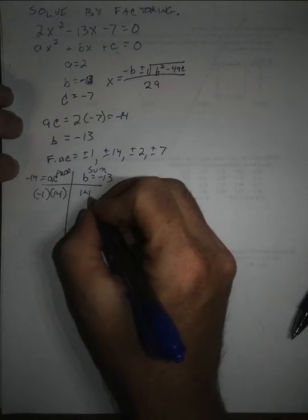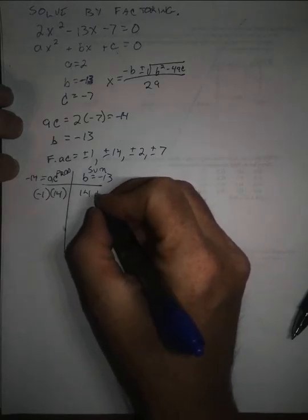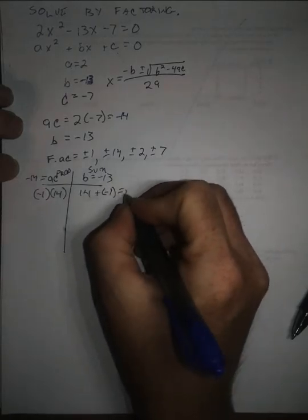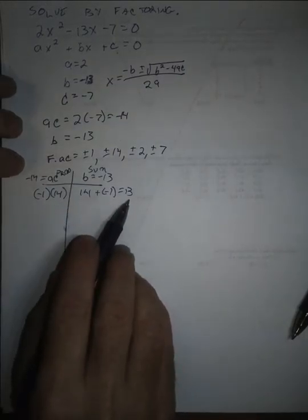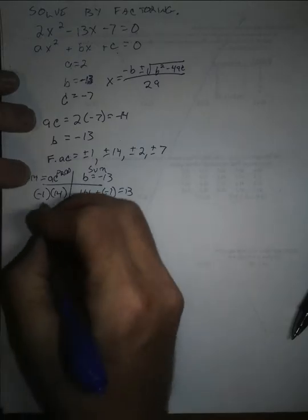In this case, 14 plus negative 1 is 13. So although the product is negative 14, it doesn't add up to 13. I can fix that, though,